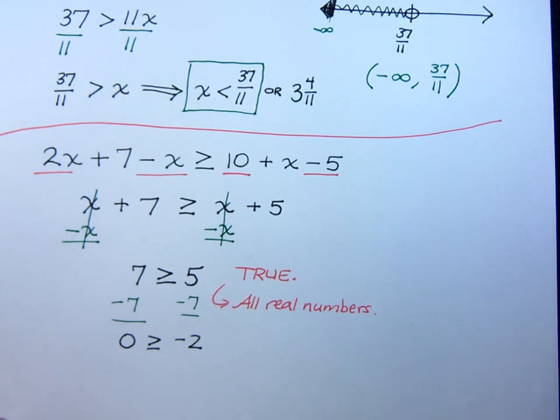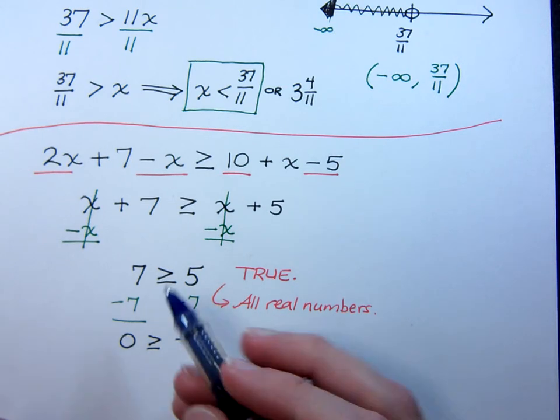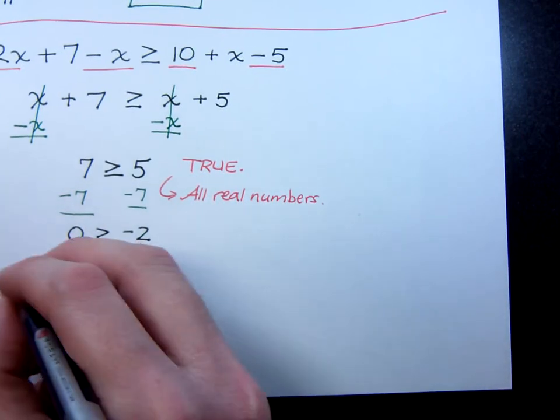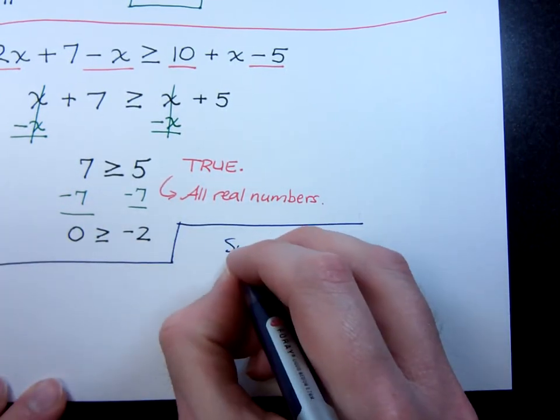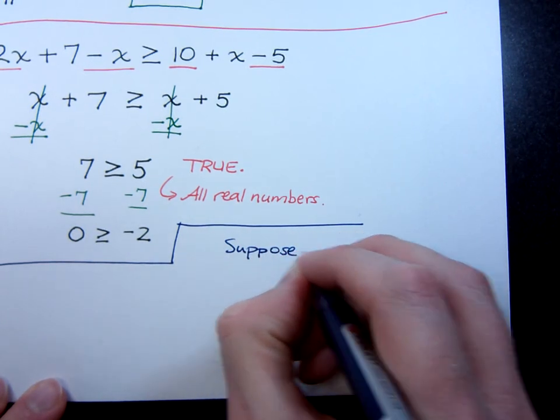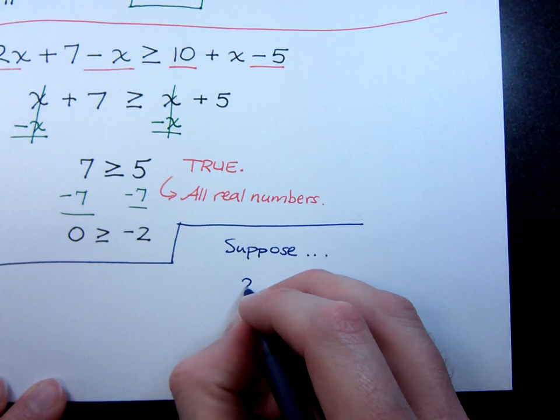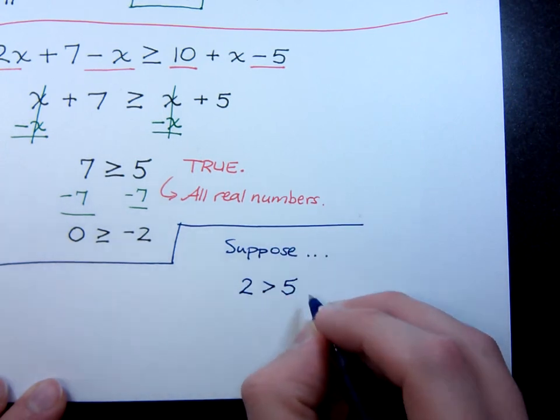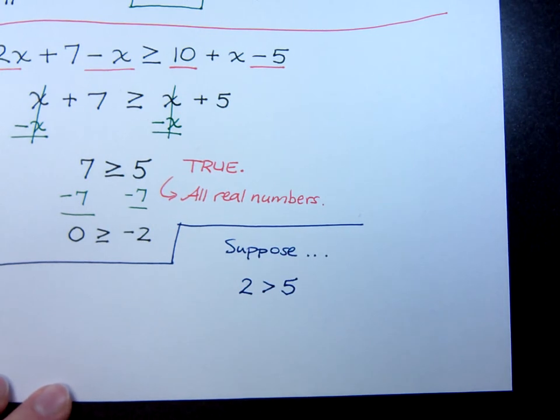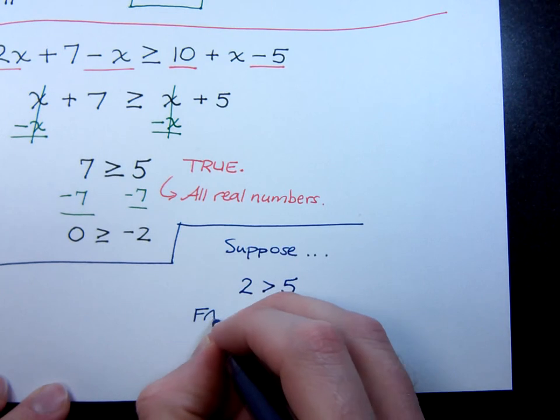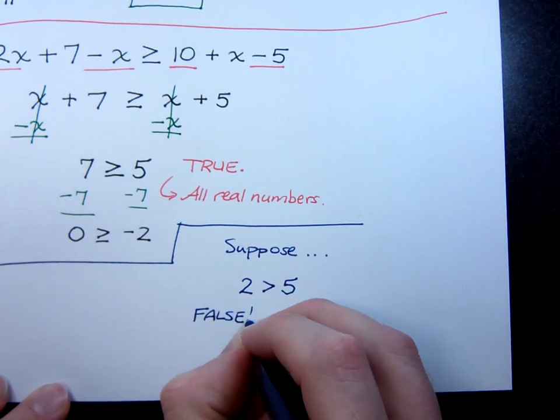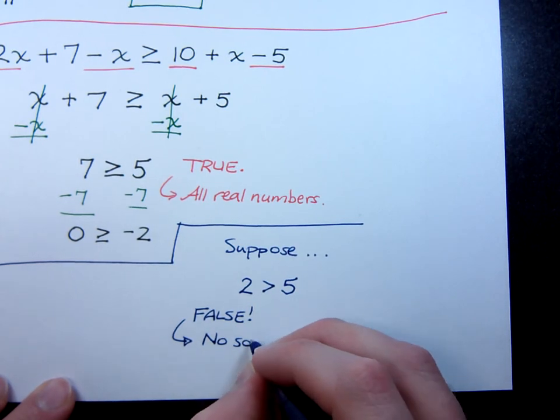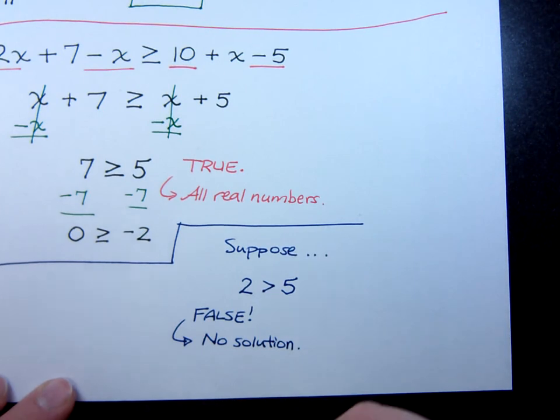Okay? Now, suppose, just suppose, go with me here for a second. Suppose that it wasn't greater than or equal to. Okay? Just a little supposition here. So, suppose that all of the variables had canceled, and you had this. You had 2 is greater than 5. Now, if you have that 2 is greater than 5, well, we know that this is a false statement. 2 is definitely not greater than 5. And that would tell me that I have no solution. It would tell me that I have no solution.